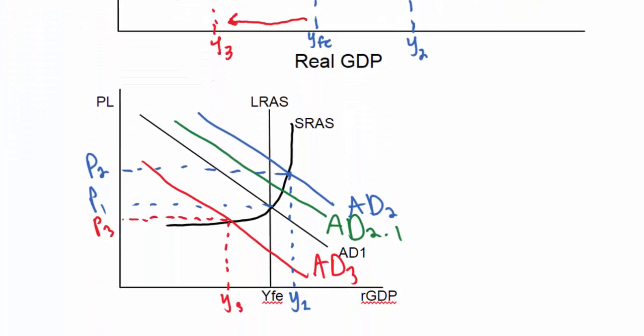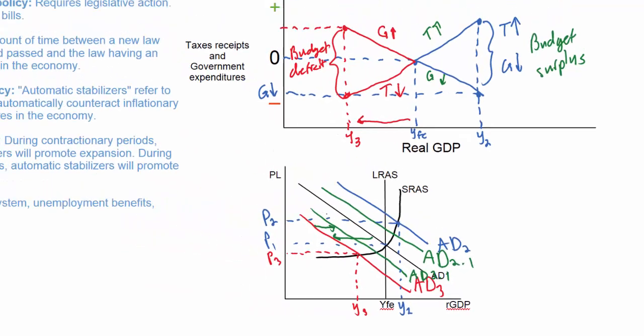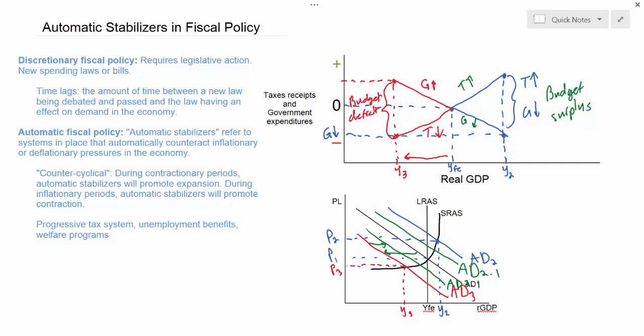Looking back at our AD/AS graph, the desired outcome of these automatic stabilizers is to mitigate the effect of the fall in aggregate demand – we'd expect to see AD fall by less than it would otherwise, to AD 3.1. So following a decrease in aggregate demand, automatic stabilizers should prevent the recession from becoming too severe and prevent deflation from occurring. The important thing is that not all fiscal policy requires legislative action. Any modern industrial economy has built-in automatic stabilizers that are counter-cyclical, mitigating both inflationary increases and deflationary decreases in aggregate demand without any need for new legislation.